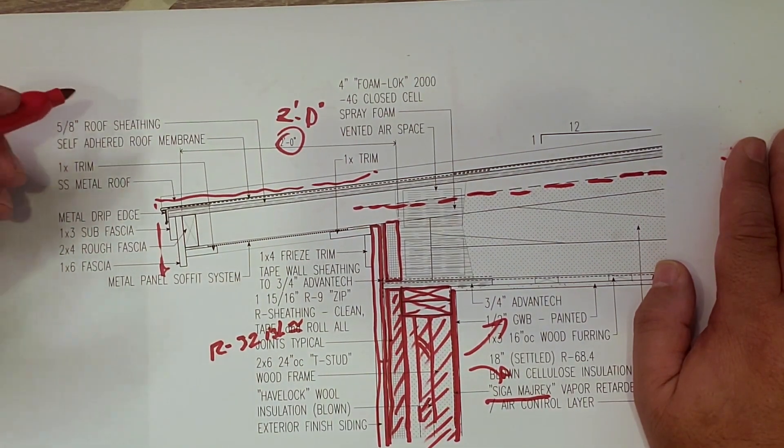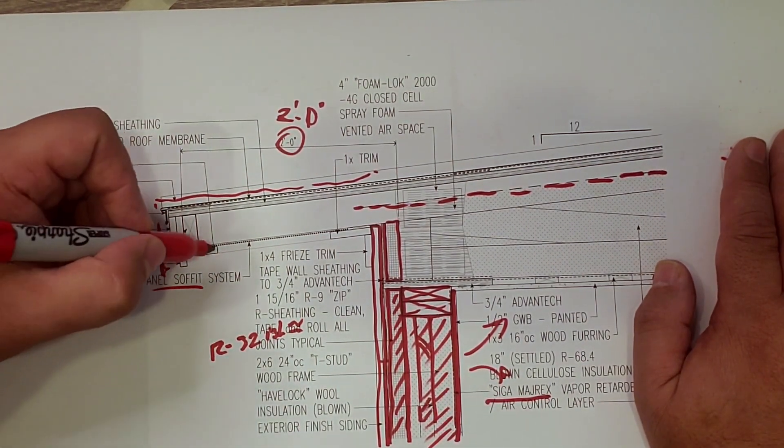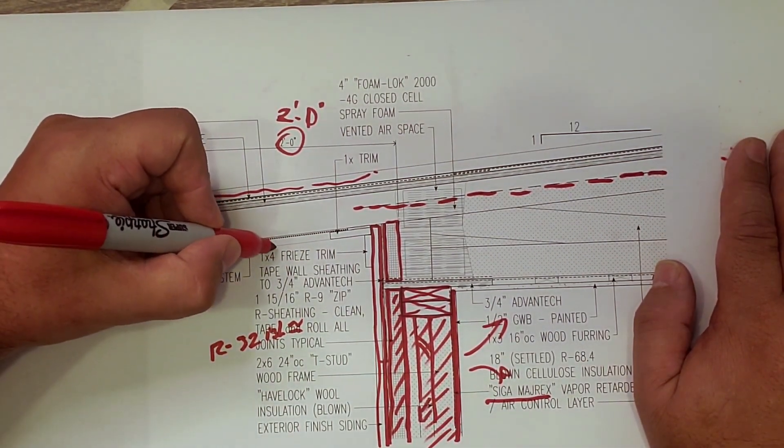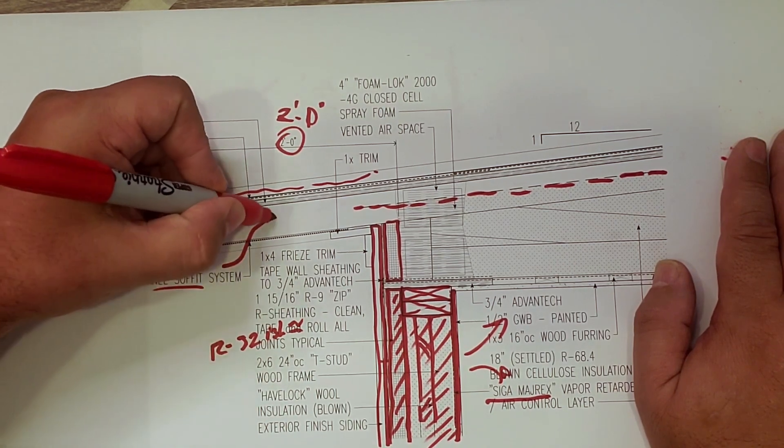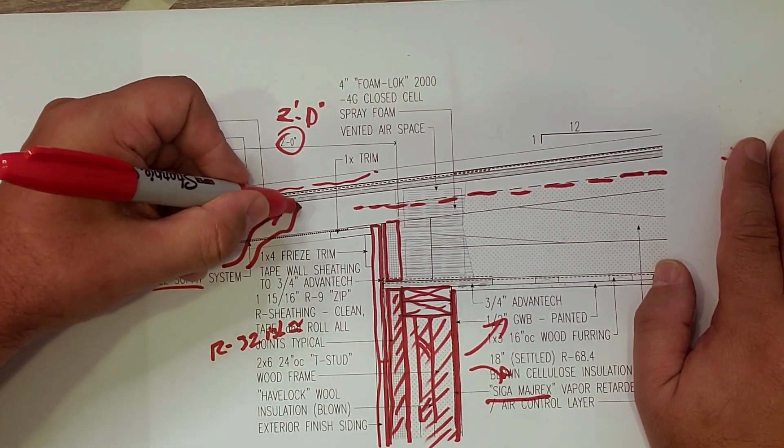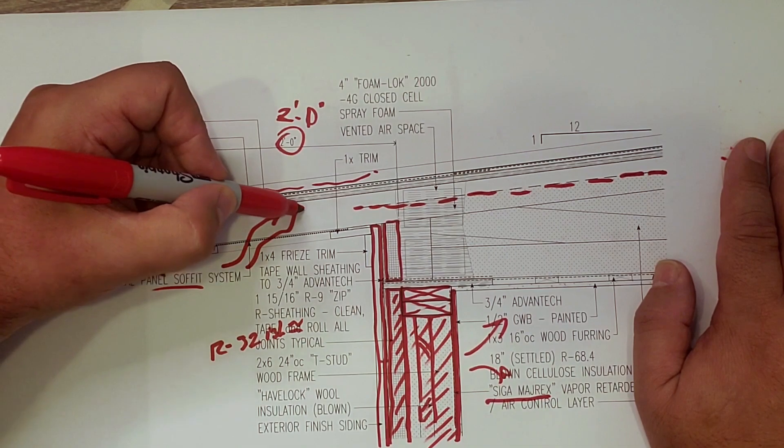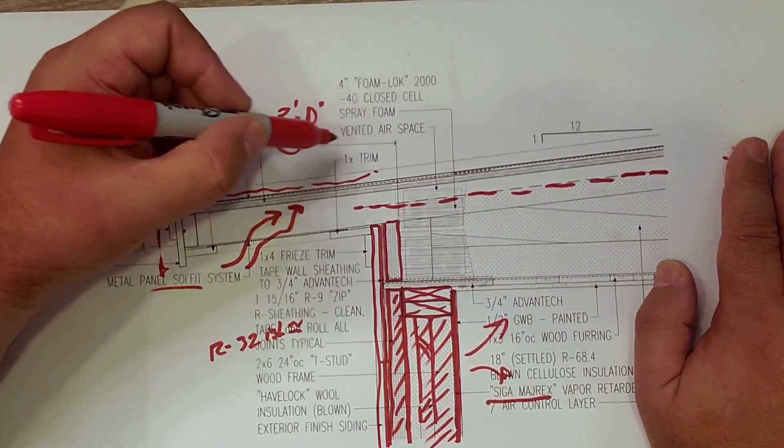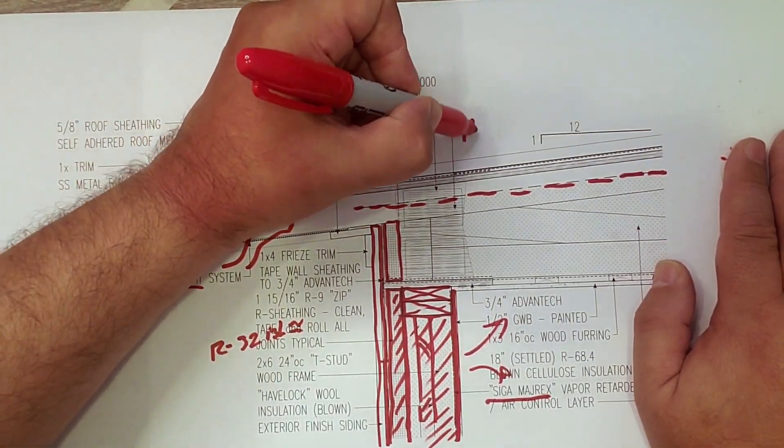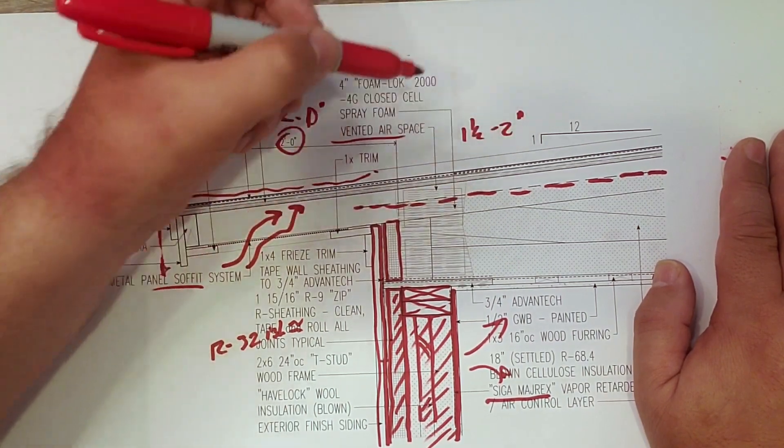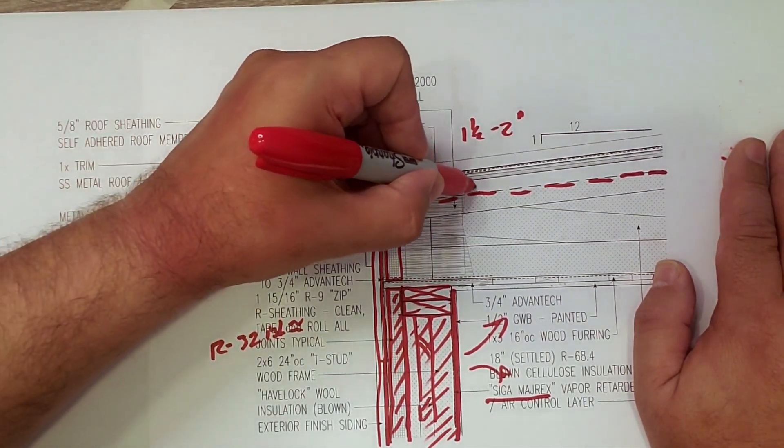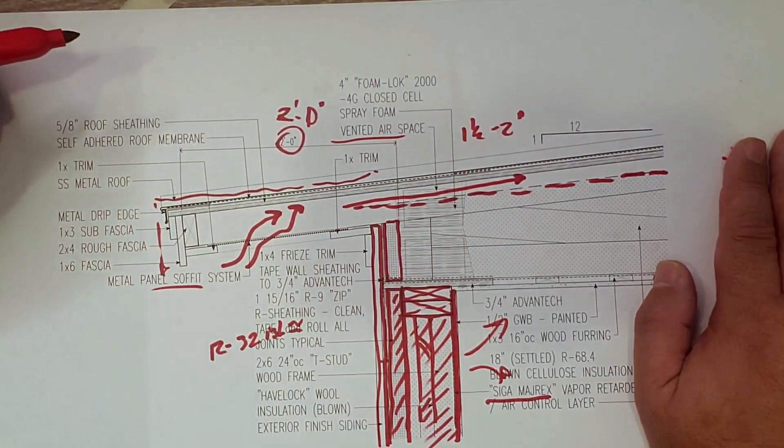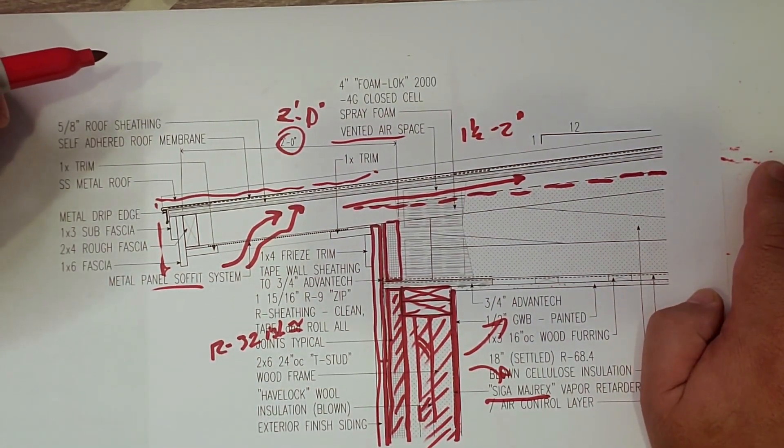And then as far as our attic goes, we have our vent space here. That's part of our vapor profile, right? We have a metal panel soffit system. That metal panel is a perforated soffit so that air can get up into that system. We have our vent space, vented air space here. Typically that's one and a half to two inches, so that we can get that air stream moving up under the underside of our sheathing.